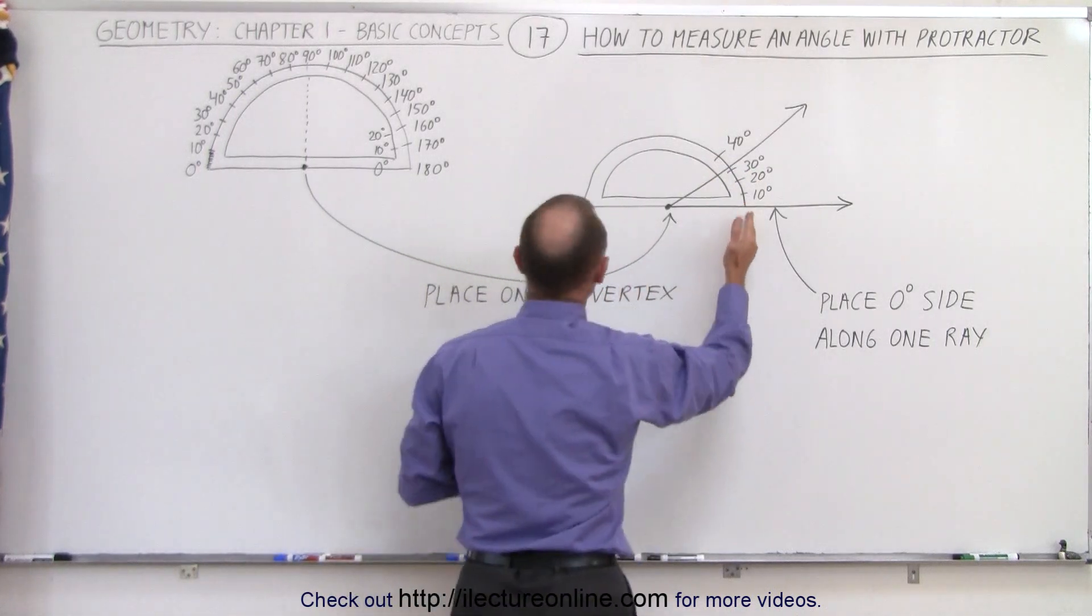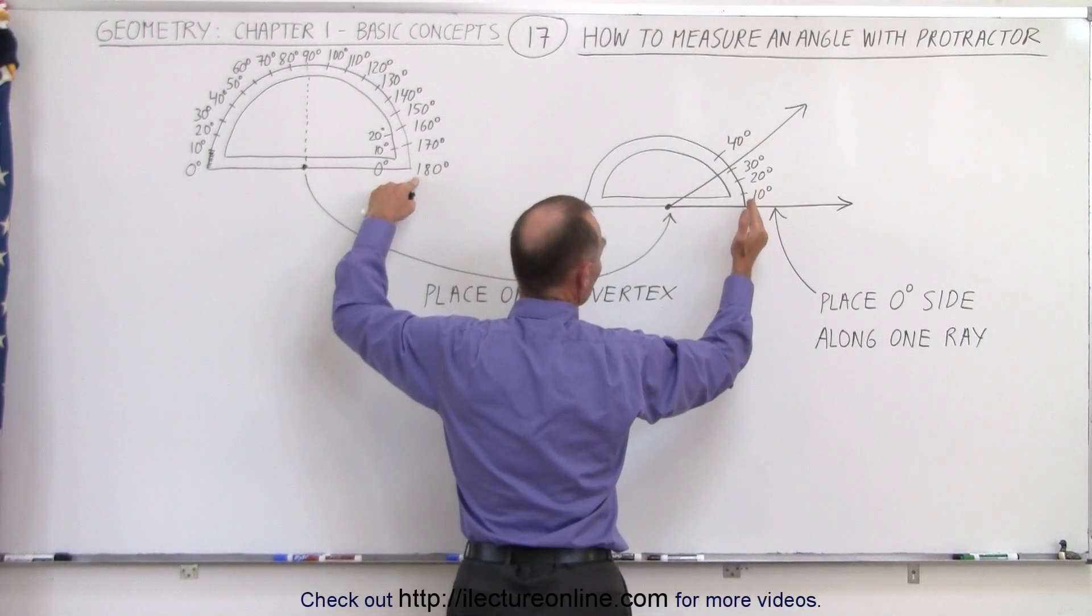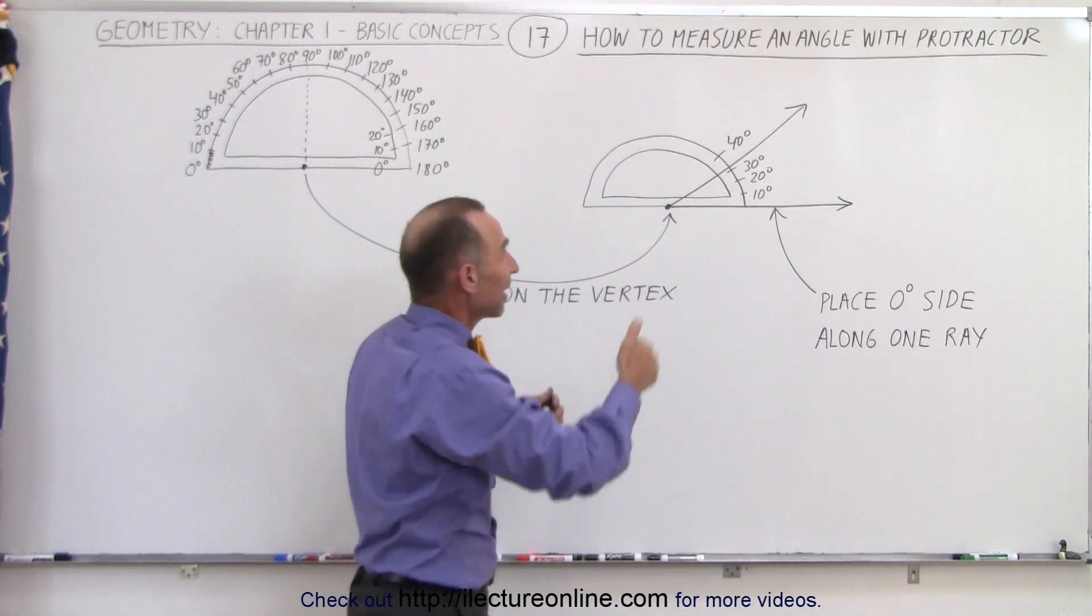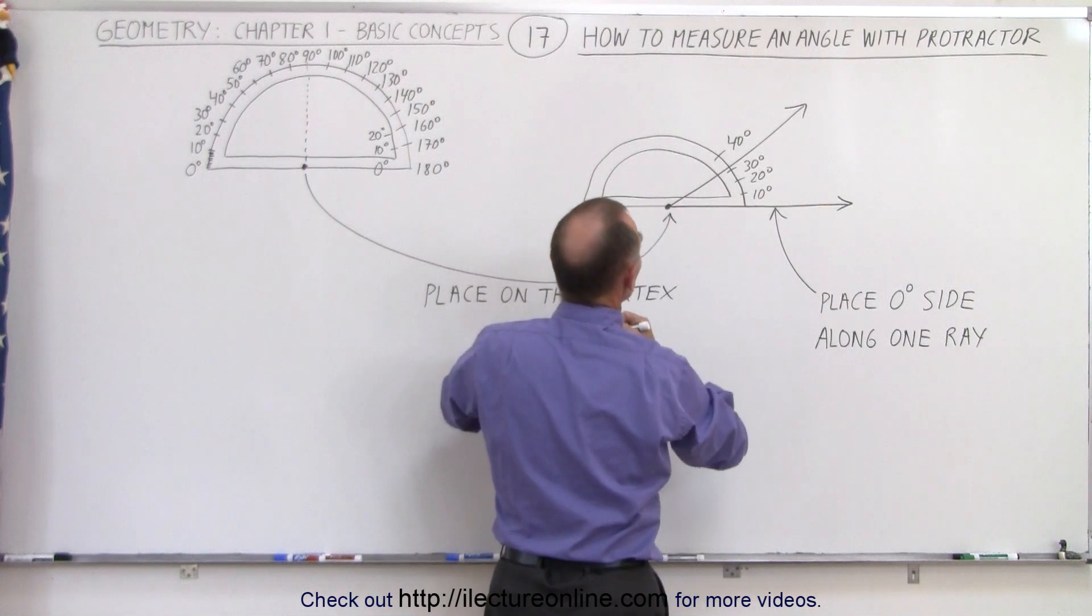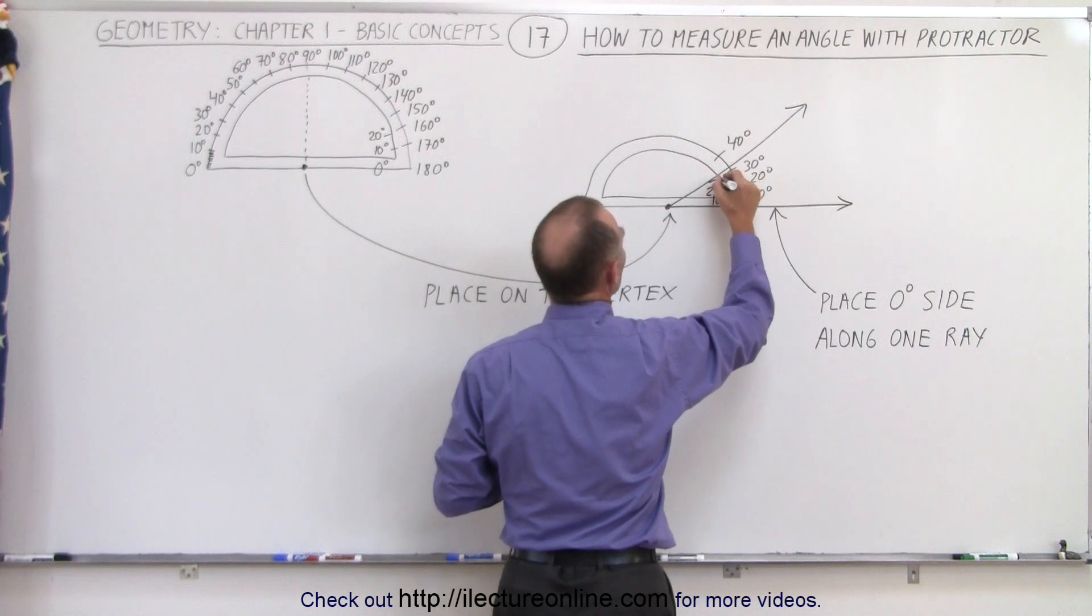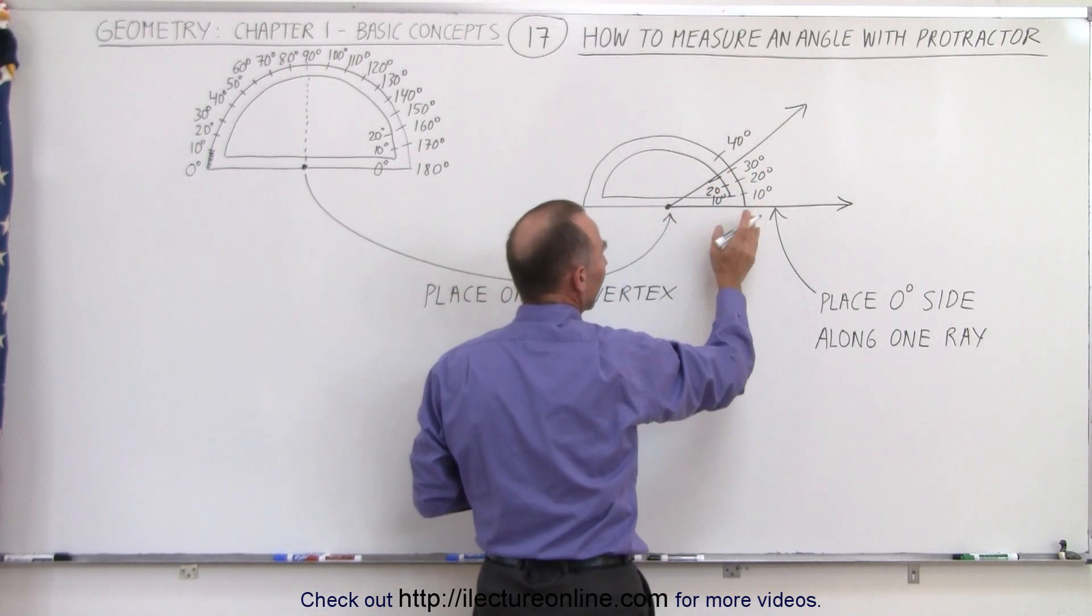Now if on this side it was the same as over here that goes from 180 to 170 to 160, then you wouldn't be able to read it along that side, you would have to read it on the inside. So sometimes the markings will be on the inside at 10 degrees, and 20 degrees, and 30 degrees, and so forth, so either you read on the outside or the inside.